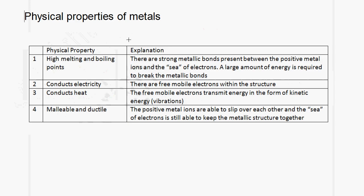Let us now look at the physical properties of metals. Metals have high melting and high boiling points. The reason for this is that there are strong metallic bonds present between the positive metal ions and the sea of electrons. A large amount of energy is required to break the metallic bonds, and it is for this reason that metals have high melting and high boiling points.